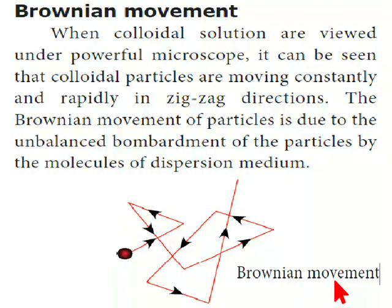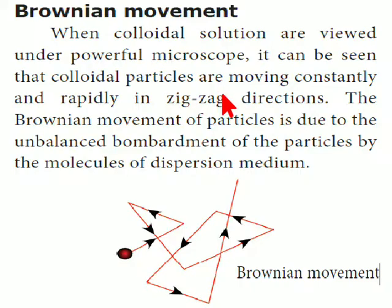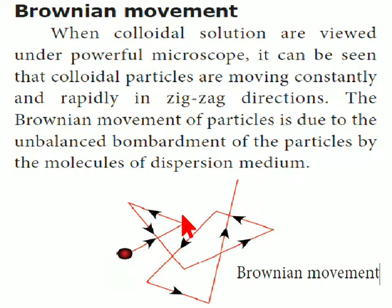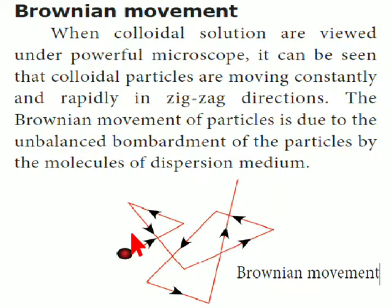Brownian movement. When colloidal particles are viewed under a powerful microscope, the particles can be seen in the colloidal solution. The particles are moving constantly and rapidly in a zigzag direction. Brownian movement of the particle is due to the unbalanced bombardment of the particles by molecules of the dispersion medium.